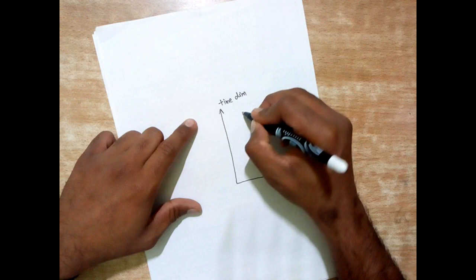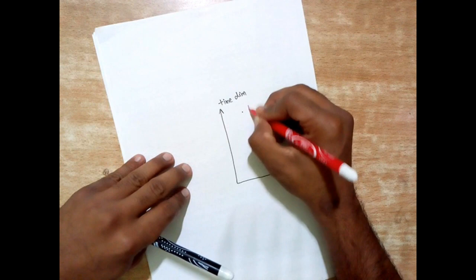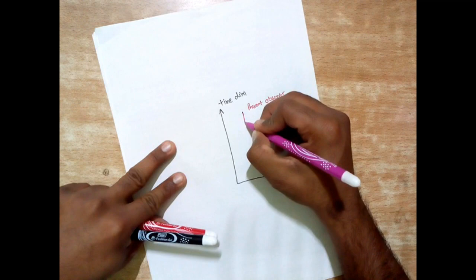So this is time dimension, this is spatial dimension. So let's start. What he does is to point over here and say that we are at present looking at this point. So this point denotes the present time, present observer.